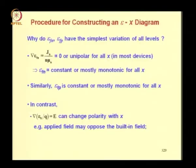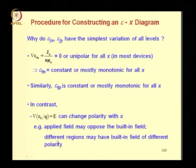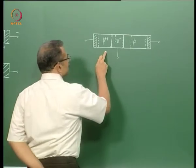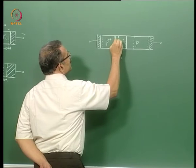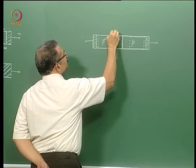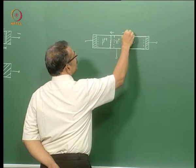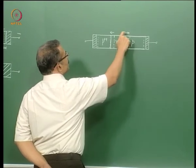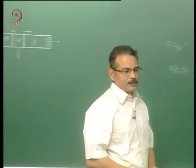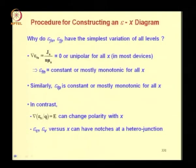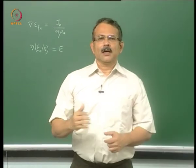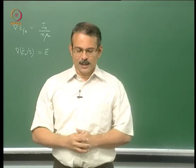Another example: in a bipolar transistor, different regions may have built-in fields of different polarity. The built-in electric field at the emitter-base junction is directed from n to p, whereas the built-in field at the base-collector junction is also from n to p but in the opposite spatial direction. So the field is changing polarity across the device. Furthermore, Ec and Ev can have notches at a heterojunction, showing sharp peaks or troughs.